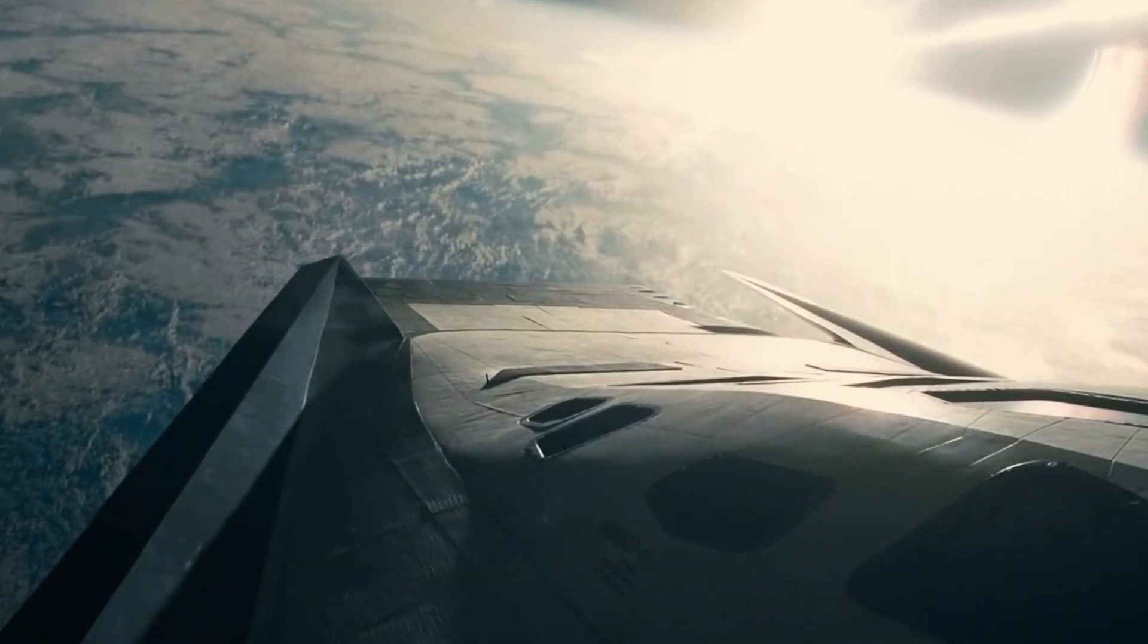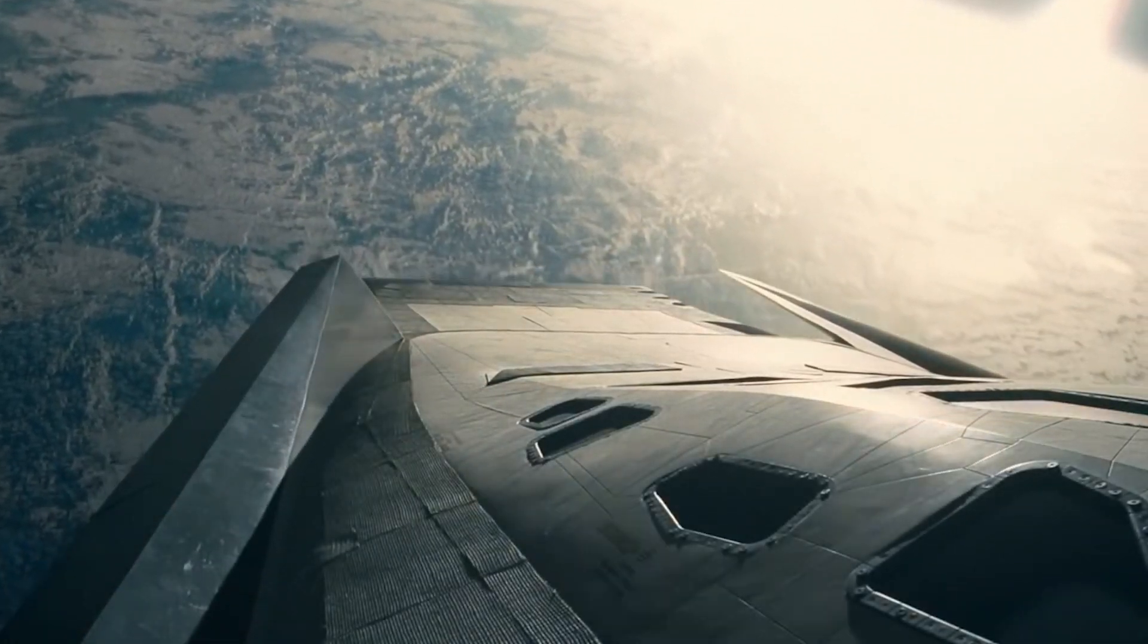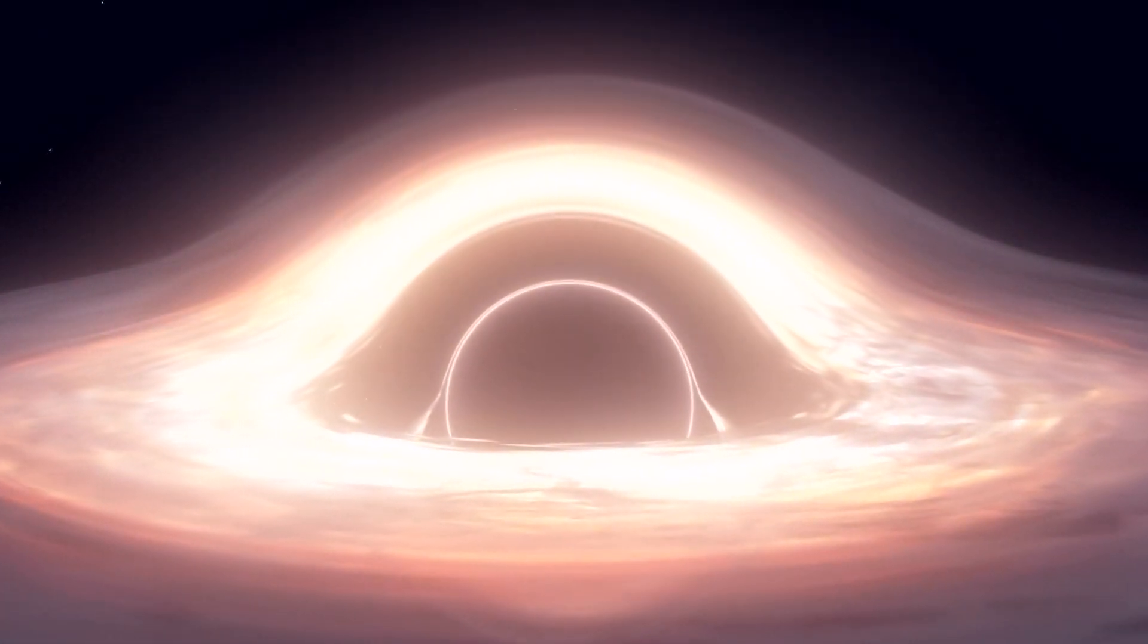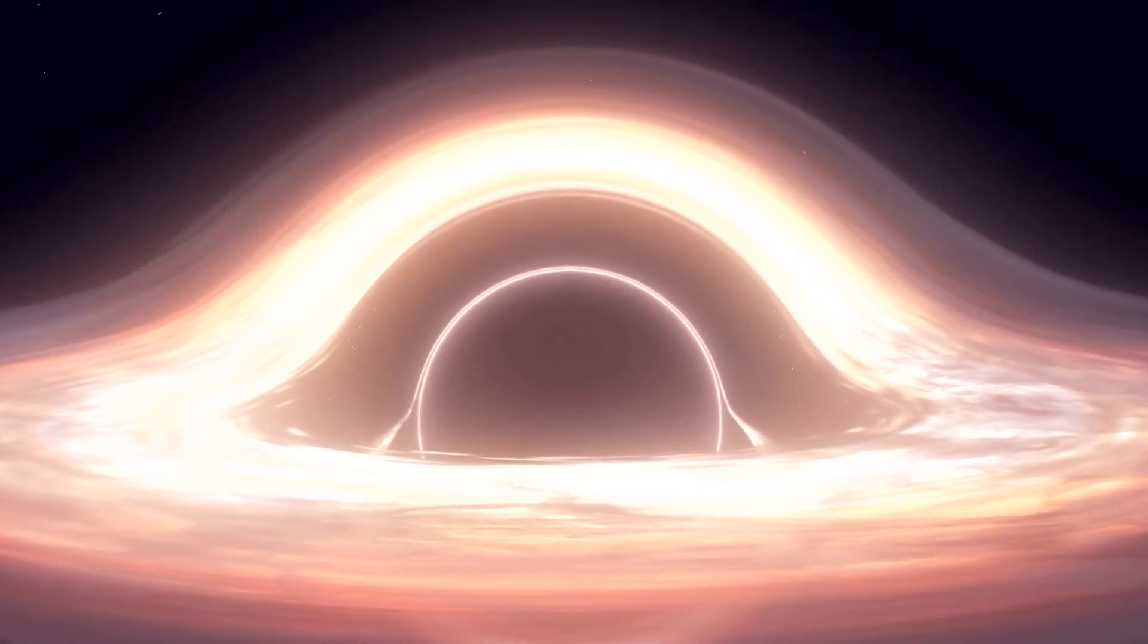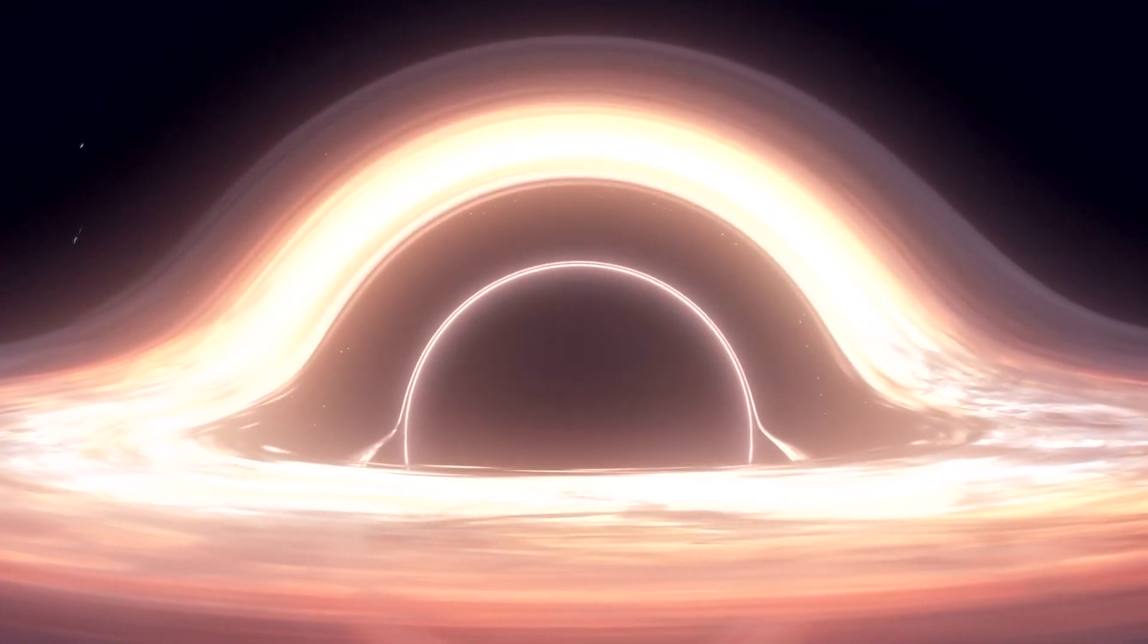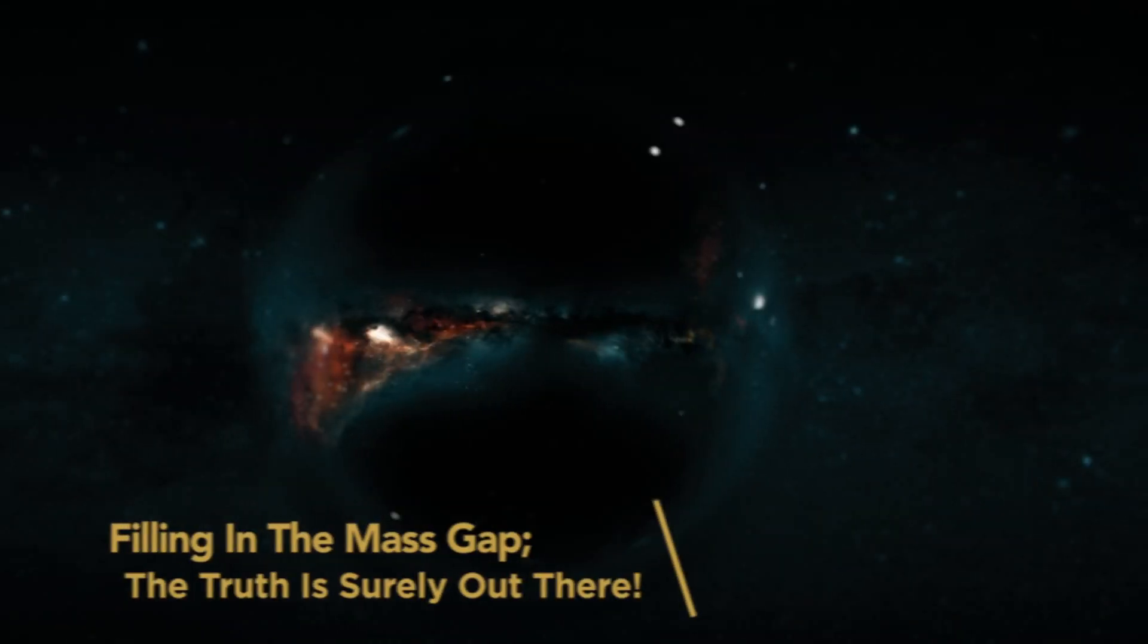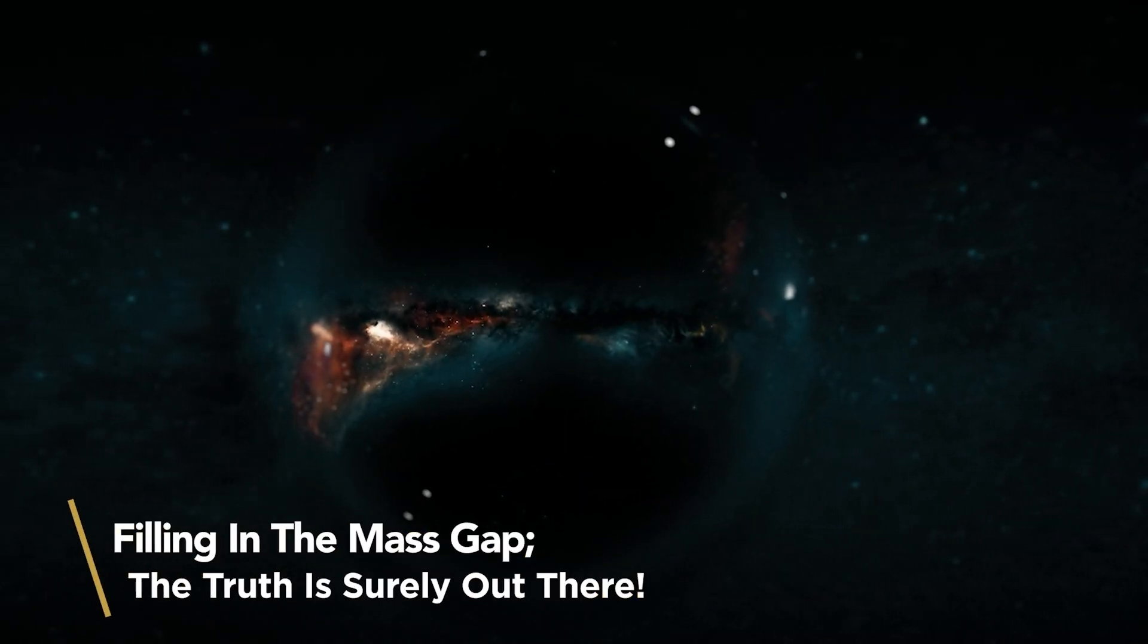We're used to seeing black holes with more than five times as much mass as our sun. They are plentiful. But these small black holes are in very short supply. Now astronomers refer to the puzzling lack of small black holes as the mass gap. The heaviest neutron star possible in the universe, the lightest black hole possible in the universe, and either there will be a gap, a desert between the two of them, or they'll be overlapped. Filling in the mass gap, the truth is surely out there.